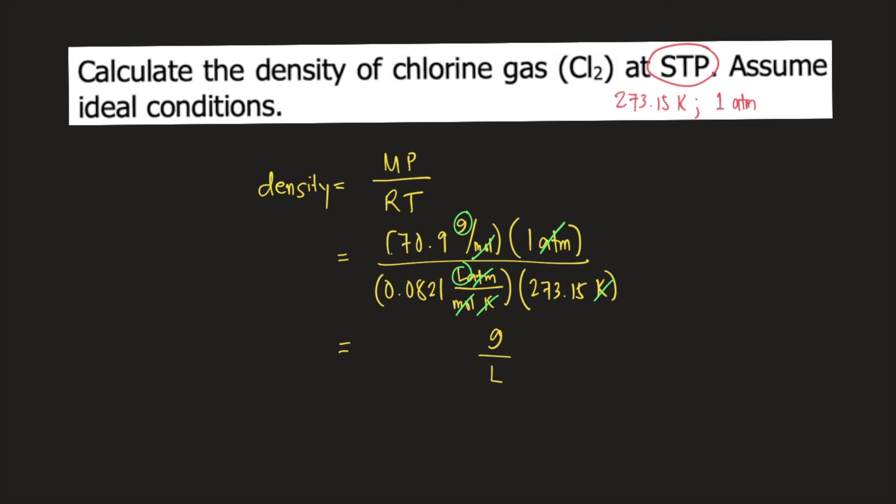If you compute this in your calculator, 70.9 times 1 divided by 0.0821 times 273.15, the density of chlorine gas at STP is equal to 3.16 grams per liter.